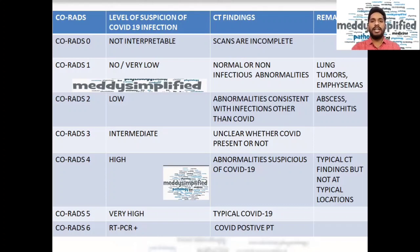CORADS 3 means the suspicion of having the infection is intermediate — in between. The CT findings are not clear as to whether COVID-19 infection is present or not. So it is labeled CORADS 3, intermediate.